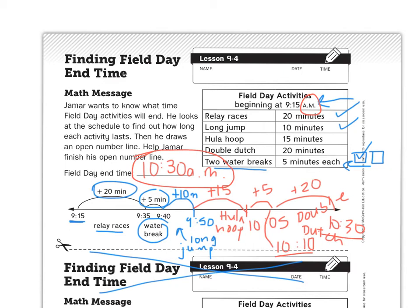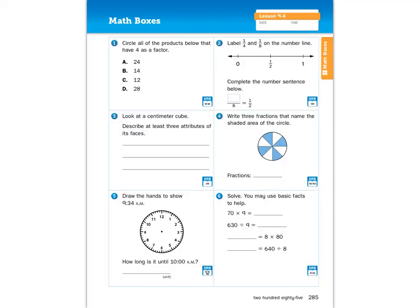We're going to go on into your math journal. And you're going to open up to page 285. And today you're going to be doing the math boxes. And I'm going to go over them very briefly. And then you're going to go ahead and do those. And then I will explain what the home link is today. This is really pretty a short lesson today. All right.